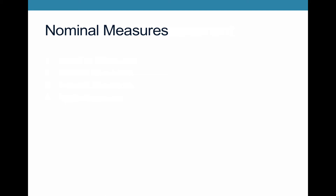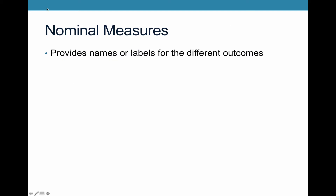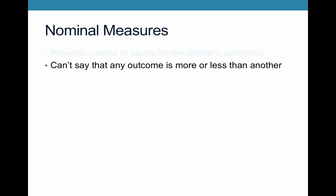So first, let's start with nominal measures. As a note, these are sometimes also called categorical measures. Nominal measures provide names or labels for the different outcomes — the different values on the variable. You can't say whether something is more or less than another; they're just different.